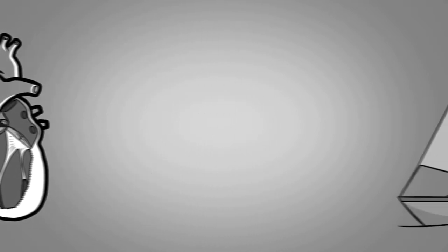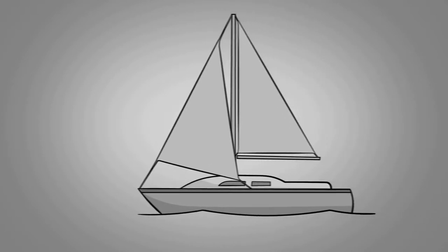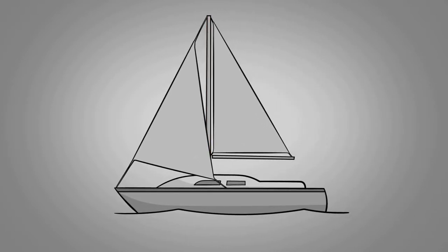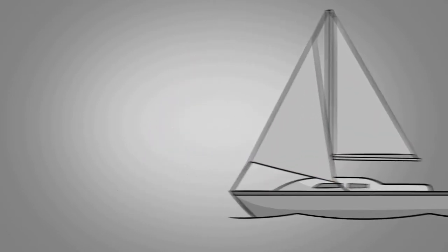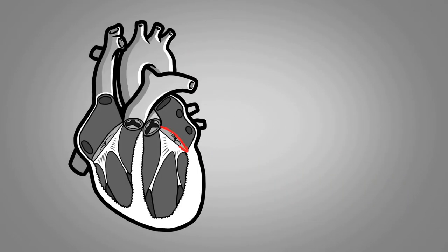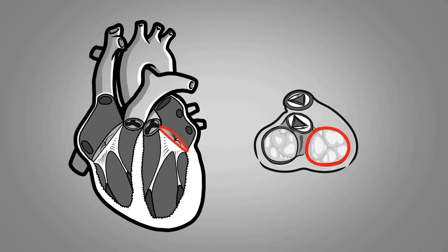To visualize it, we can compare the mitral apparatus to a sailboat equipped with a mast, ropes that connect the sail to the different structures, and a sail. The two leaflets are fixed all around the fibrous ring, like a sail is fixed along the mast.